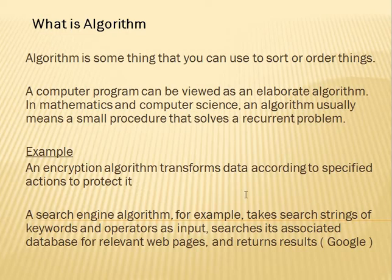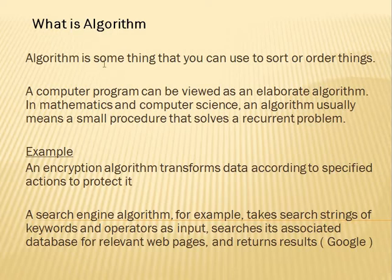Algorithm is very important. One other important thing is that the algorithm was basically made by a Muslim scientist, Muhammad — the algorithm. So basically, the algorithm was made by Muhammad. Algorithm is basically something that you can use to sort or arrange things. By definition, algorithm is something that you can use to sort or arrange things. This is the main definition.